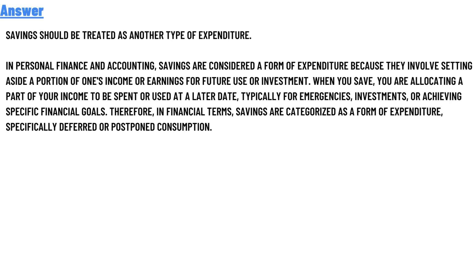In personal finance and accounting, savings are considered a form of expenditure because they involve setting aside a portion of one's income or earnings for future use or investments. When you save, you are setting part of your income aside to spend or use at a later date, typically for investments or specific financial goals. Therefore, in financial terms, savings are categorized as expenditure, specifically deferred consumption.